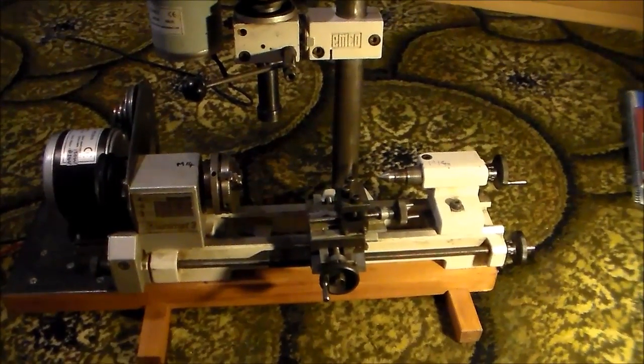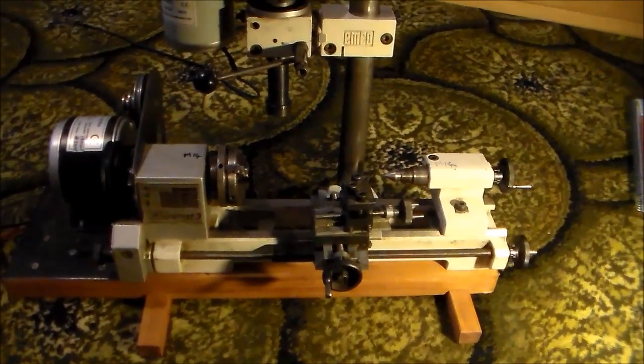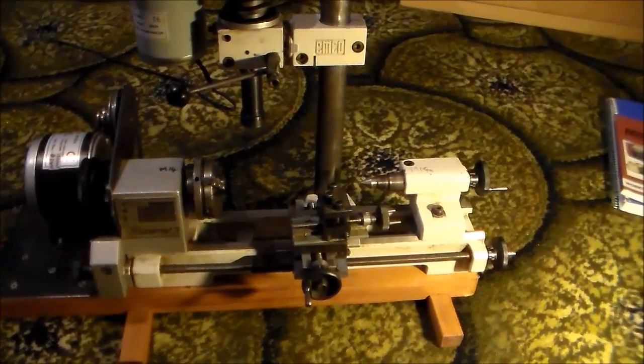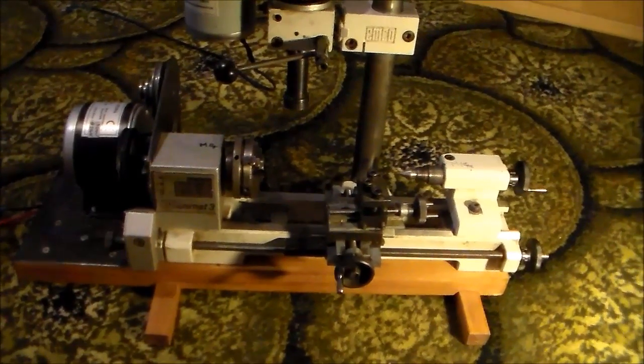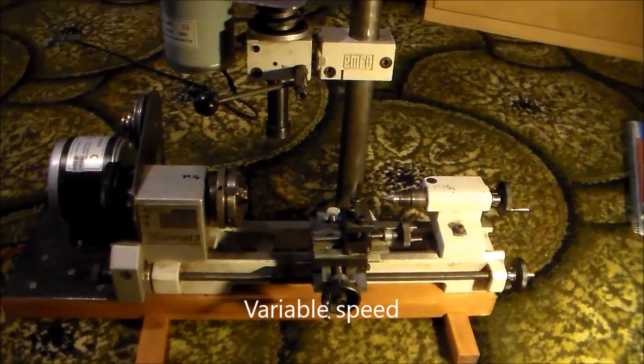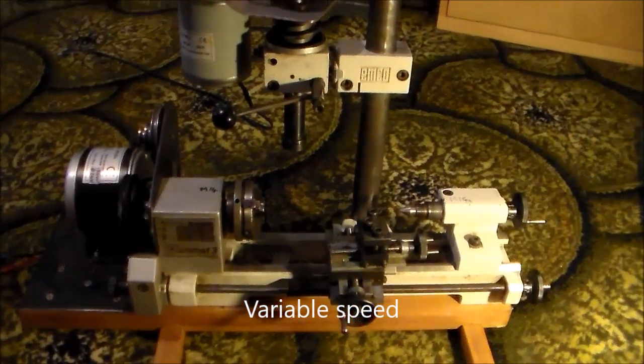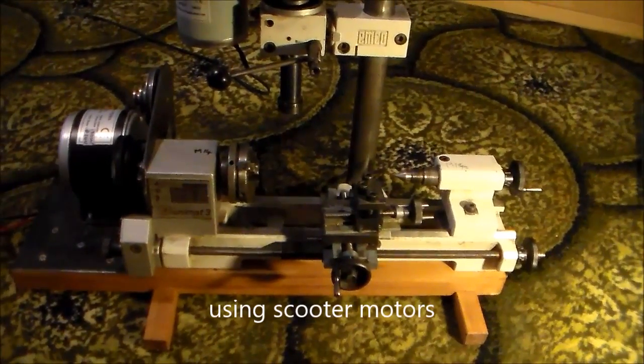This is an Emco Unimat 3. There are a couple of other videos on YouTube which show this lathe, but the reason I wanted to do another video is just to show it fitted with variable speed motor drives, which I think is a marvelous addition.